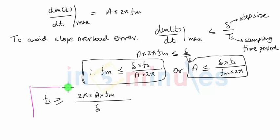So if my input frequency and input amplitude are constant, then to avoid slope overload I should use the sampling frequency which is greater than or equal to the right hand side value, where fm is my input frequency, a is my input signal amplitude.